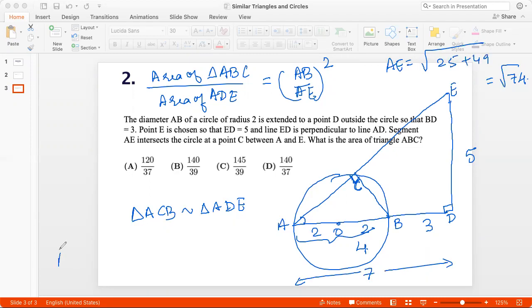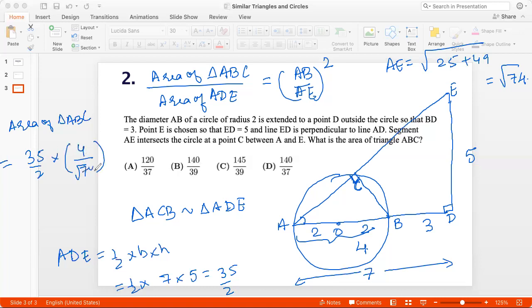What is area of ADE? Area of ADE is half base into height, which is half. The base is 7 and the height is 5, so that's 35 by 2. And so with those data points, I can say that area of triangle ABC is area of triangle ADE, which is 35 by 2 multiplied by 4 by root 74 the squared, which is 35 by 2 into 16 by 74, which is 2 8s are 16, 2 4s are 8, 37. So that comes to 140 by 37 option D.